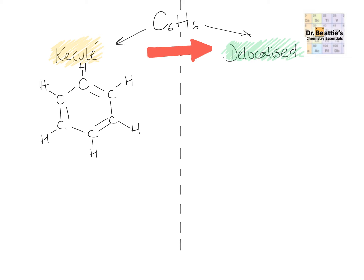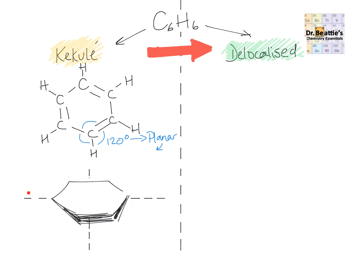Kekulé knew that the ring was planar, so it had bond angles of 120 degrees around each of the carbon atoms, and it exists in a three-dimensional plane. The carbon ring in the skeletal diagram looks like so. And if we drew in the p-orbitals for these carbons, we've got six p-orbitals, one for each of the carbons.